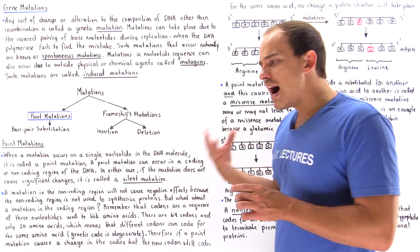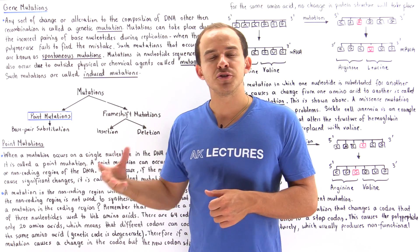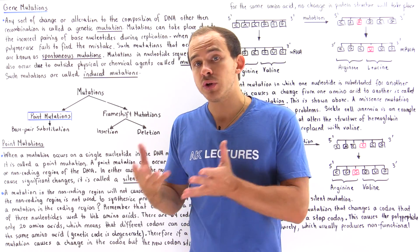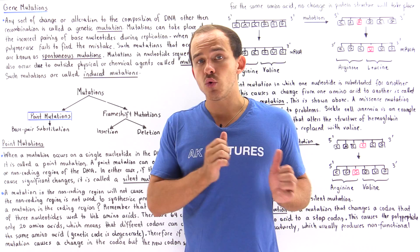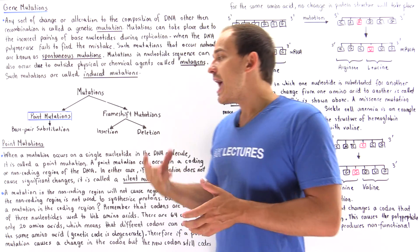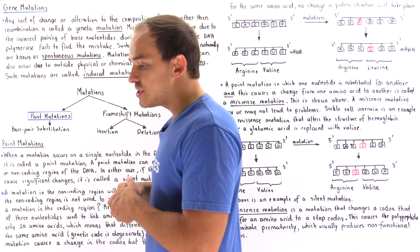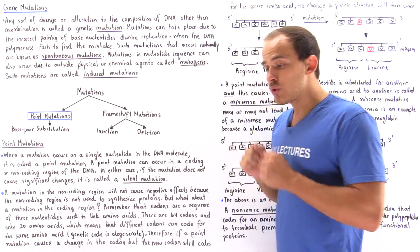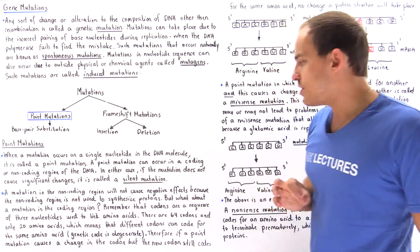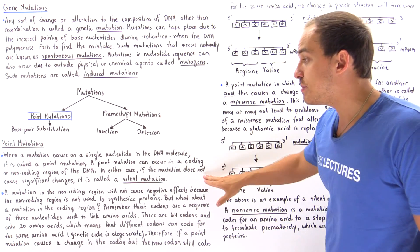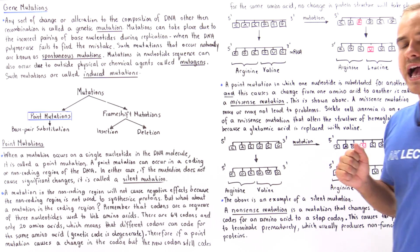It's fairly obvious why a point mutation on a non-coding region leads to a silent mutation: the non-coding region doesn't actually code for any protein. We do not use the non-coding region to synthesize any polypeptide chain. Therefore, a mutation in the non-coding region will not cause negative effects because it is not used to synthesize our proteins.